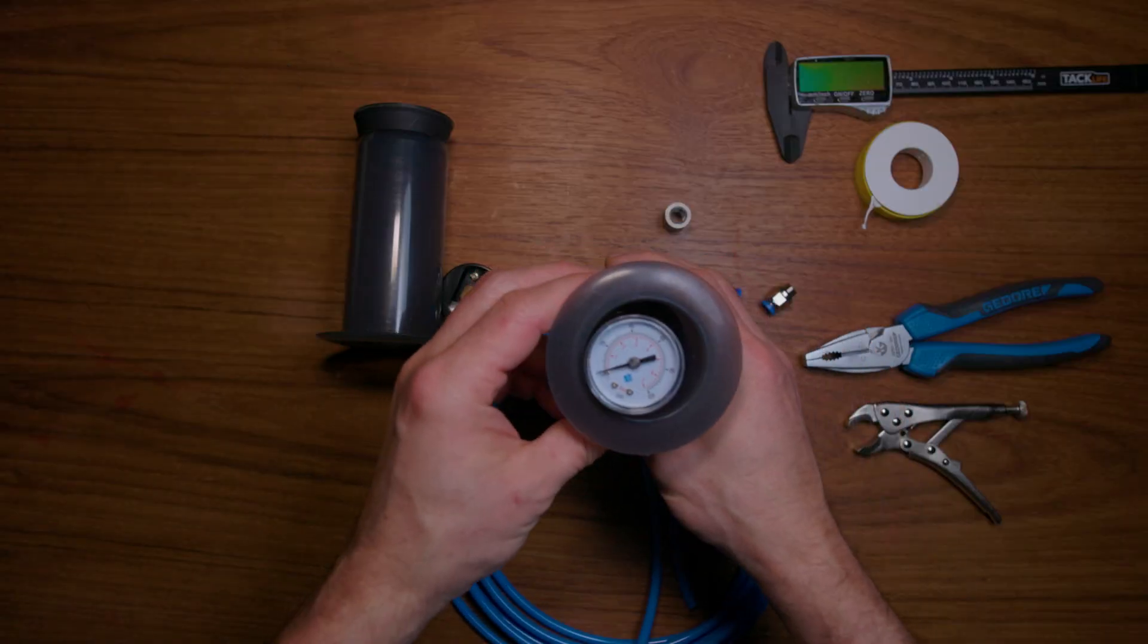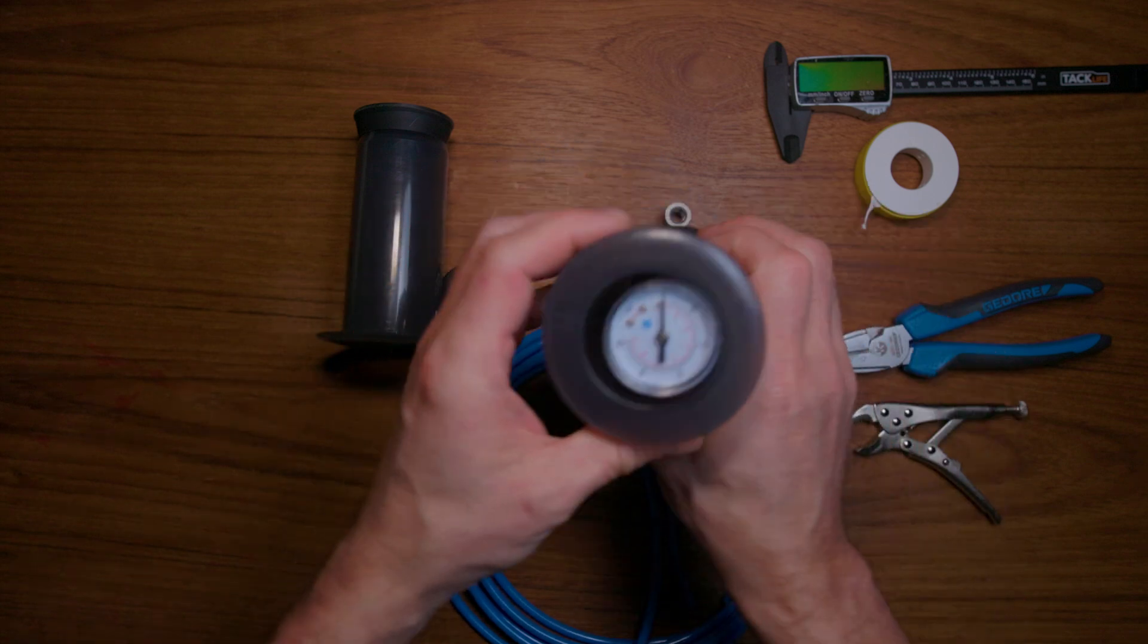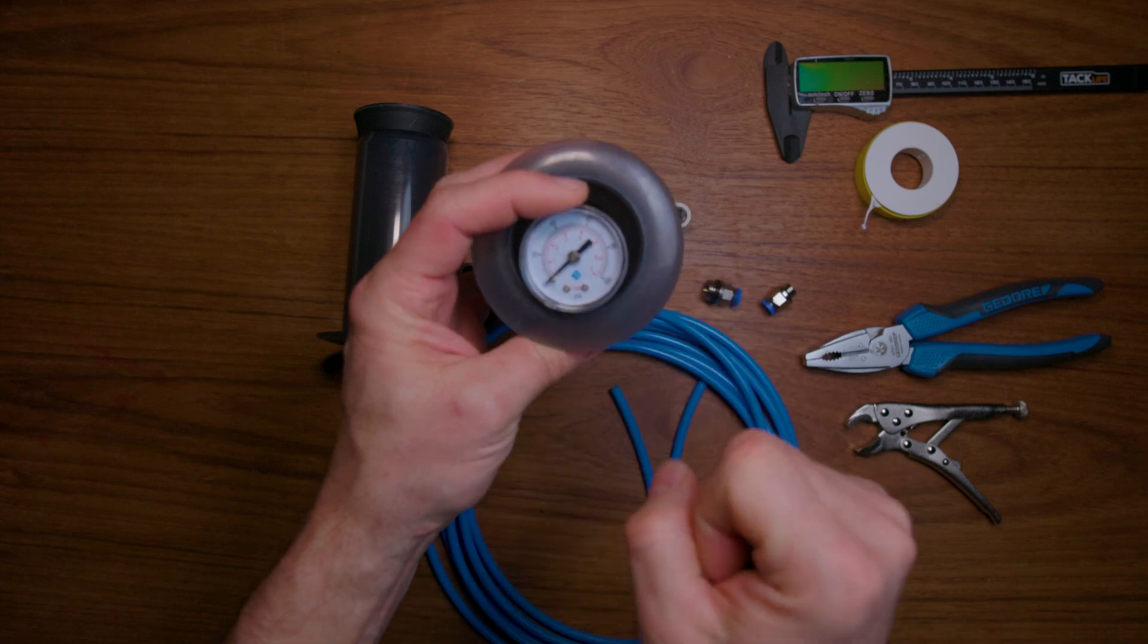As you saw in my video, this is the plunger of the AeroPress where I inserted a pressure gauge, in this case up to 7 bar.